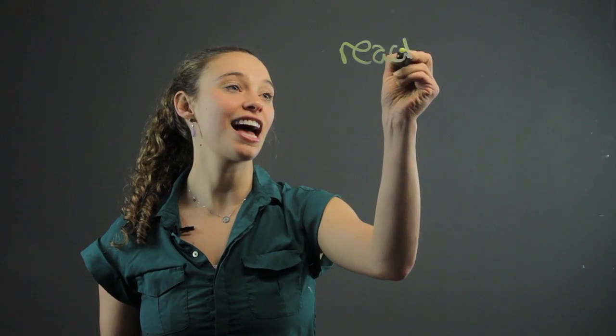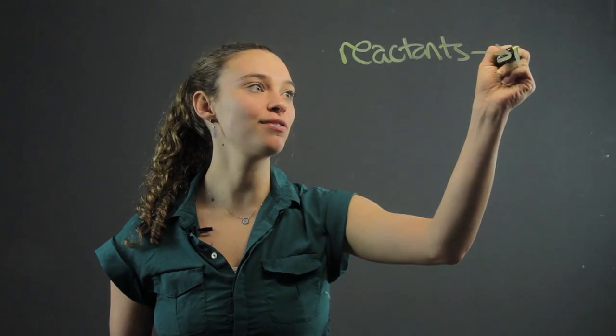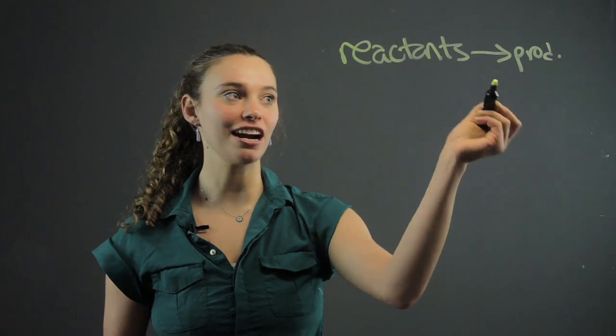It's as simple as the reactants are on the left side. We're reading right to left, and they make the products, which are going to be on the right side of this arrow.